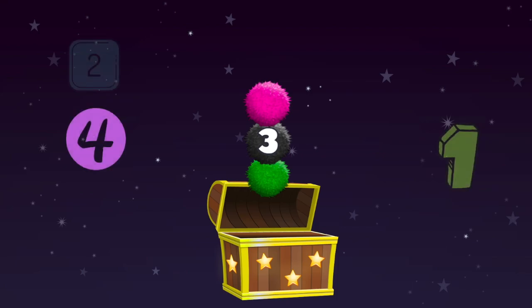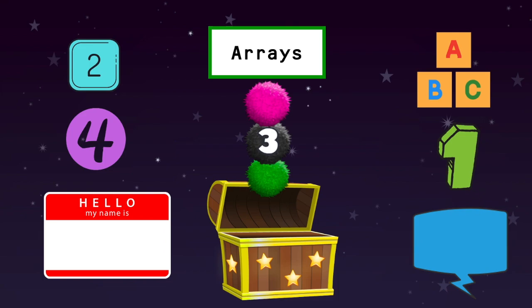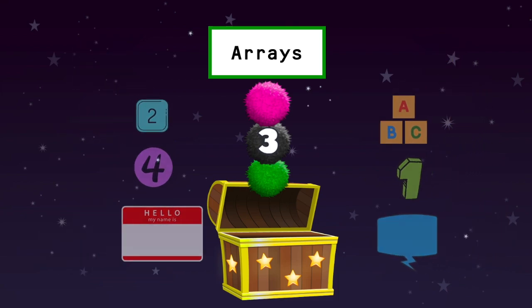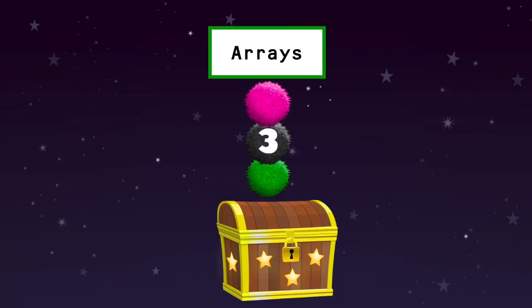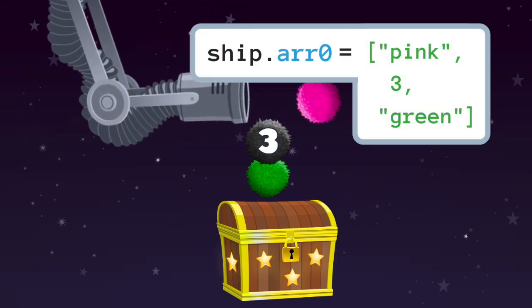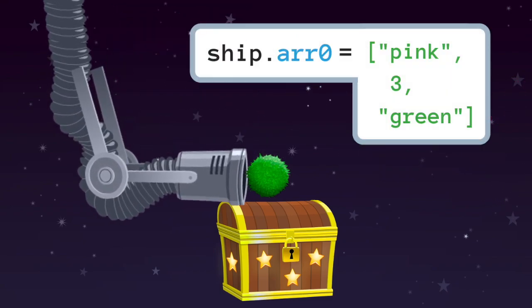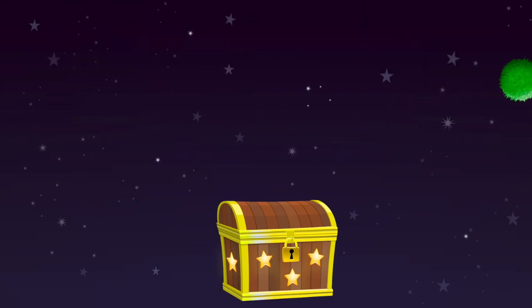The final type of variable in Codable is an array. This type of variable stores both integers and strings in an ordered list. In Codable, arrays are shown with brackets and can store both the colored and numbered fuzzballs in sequence.